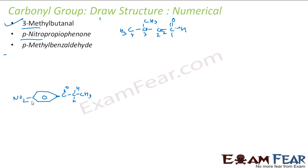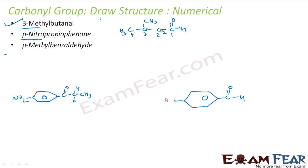The next is paramethylbenzaldehyde. Let me draw benzaldehyde first. This is my benzaldehyde. And at the para position, I have a methyl group. This is my para position. Add a CH3. This is my paramethylbenzaldehyde.